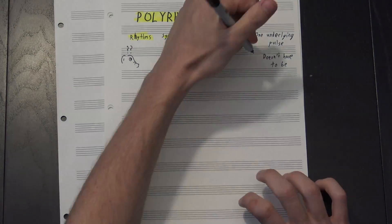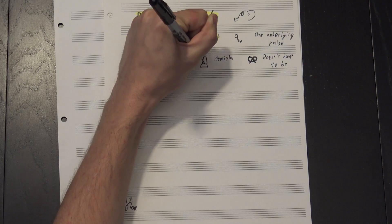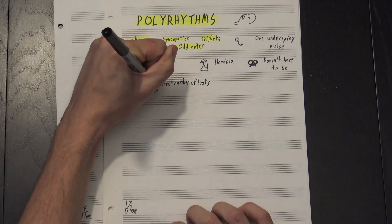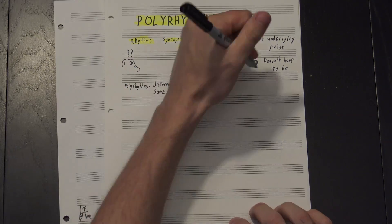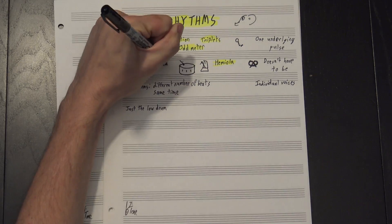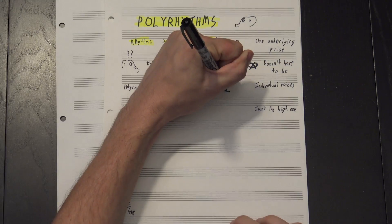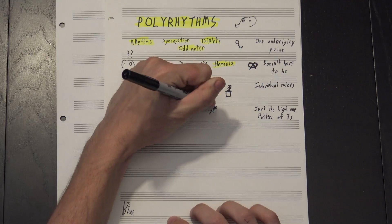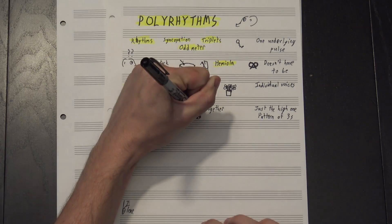What do I mean by that? Well, let's take a look at one of the most popular polyrhythms: the hemiola. A polyrhythm at its most basic is when two parts play a different number of beats in the same amount of time. Check out that hemiola again, and now let's listen to the individual voices. If we listen to just the low drum, we hear a pattern of two beats. But if we listen to just the high one, we hear three beats in the same time. Play them together, and you have a polyrhythm — in this case what we call three against two.